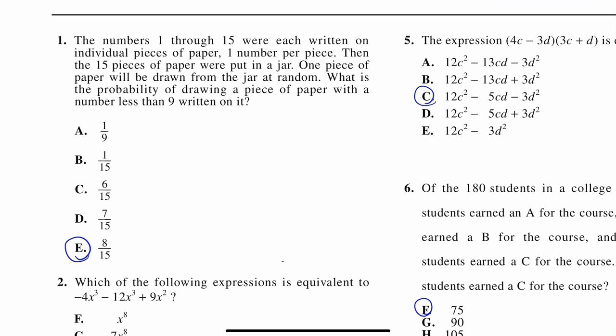So this is question number one. It says the numbers 1 through 15 were each written on individual pieces of paper, one number per piece. Then, the 15 pieces of paper were put in a jar. One piece of paper will be drawn from the jar at random. What is the probability of drawing a piece of paper with a number less than 9 written on it? So I'm going to go ahead and start this.